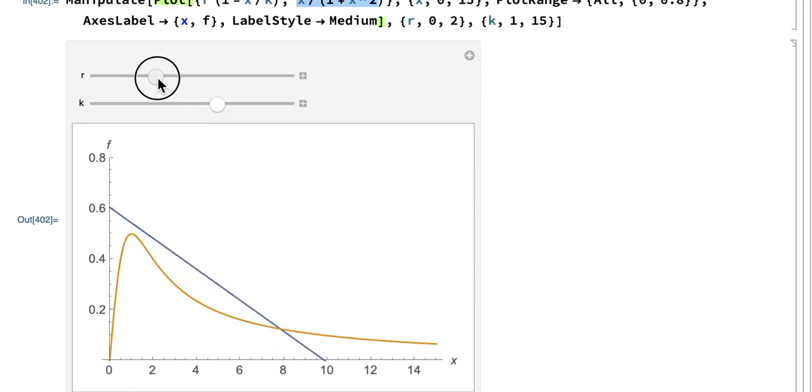If I keep changing parameters, I can go through another saddle node bifurcation. So I can either go through a saddle node bifurcation via a tangency that happens up here, or I can go through a saddle node bifurcation via a tangency that happens down here.